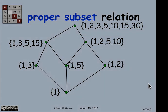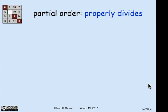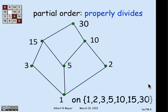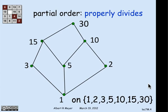Now, let's look at a very similar example of the proper divides relation on some numbers. So proper divides means A properly divides B if A divides B and it's not equal to B. And I'm interested in the proper divides relation on this set of seven numbers, 1, 2, 3, 5, 10, 15, and 30.